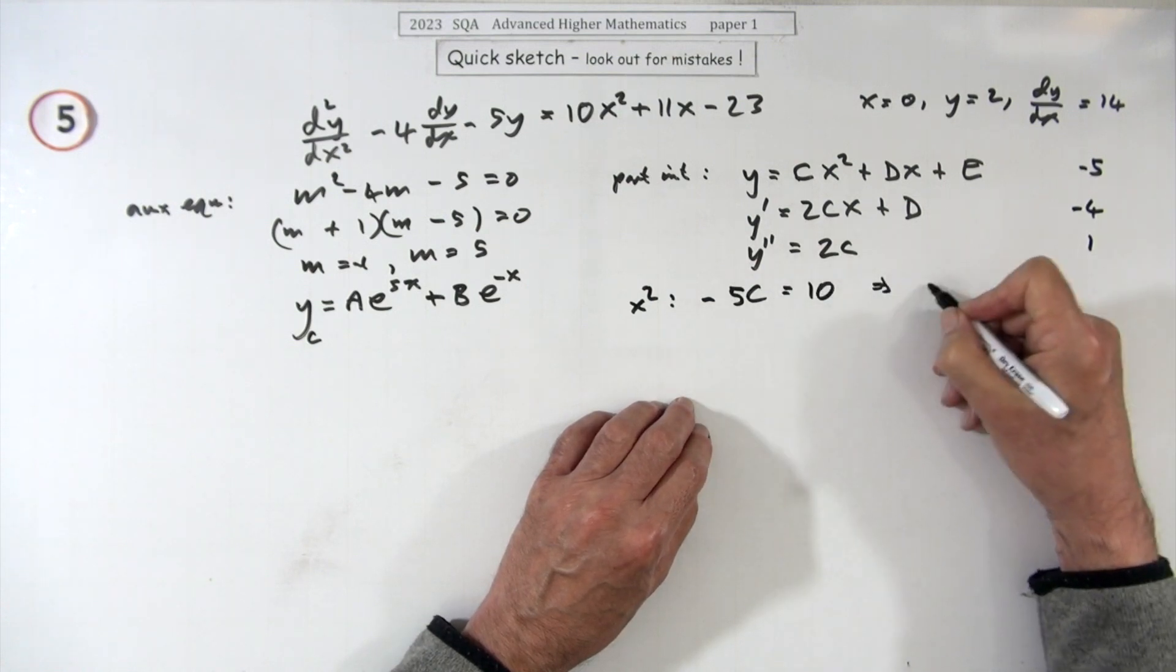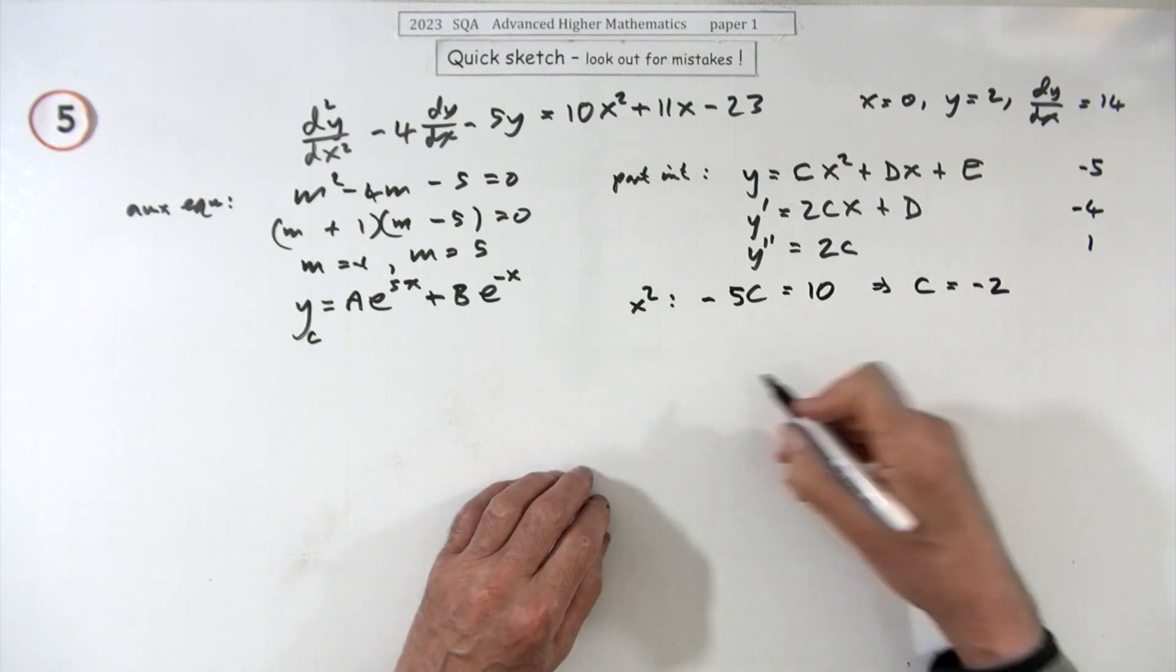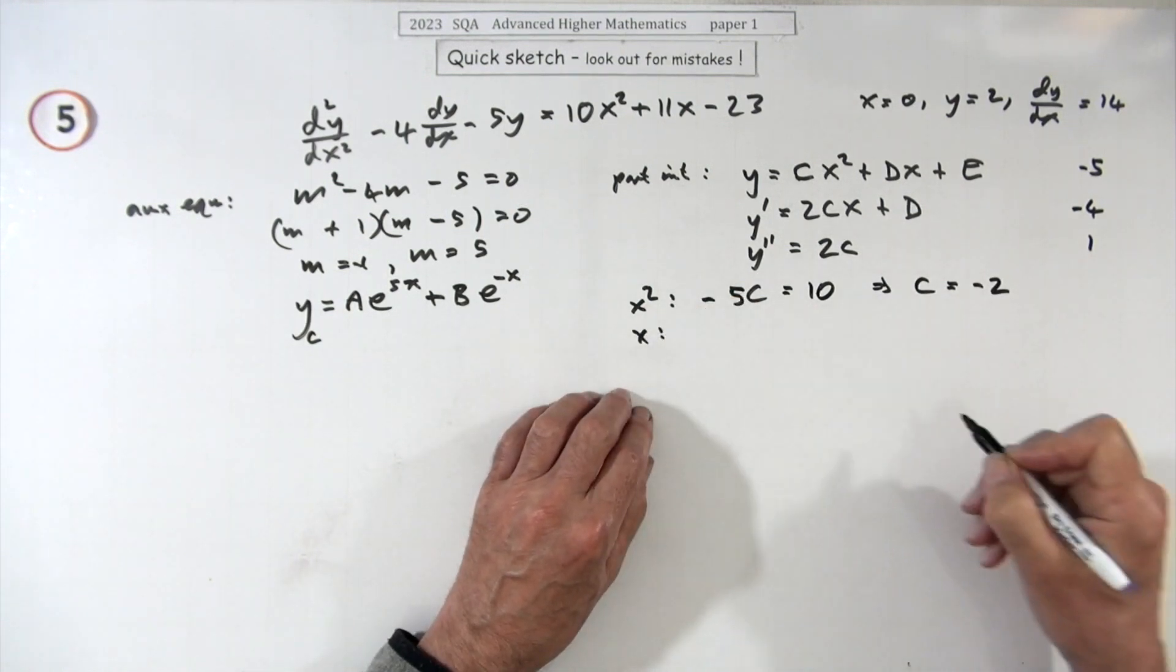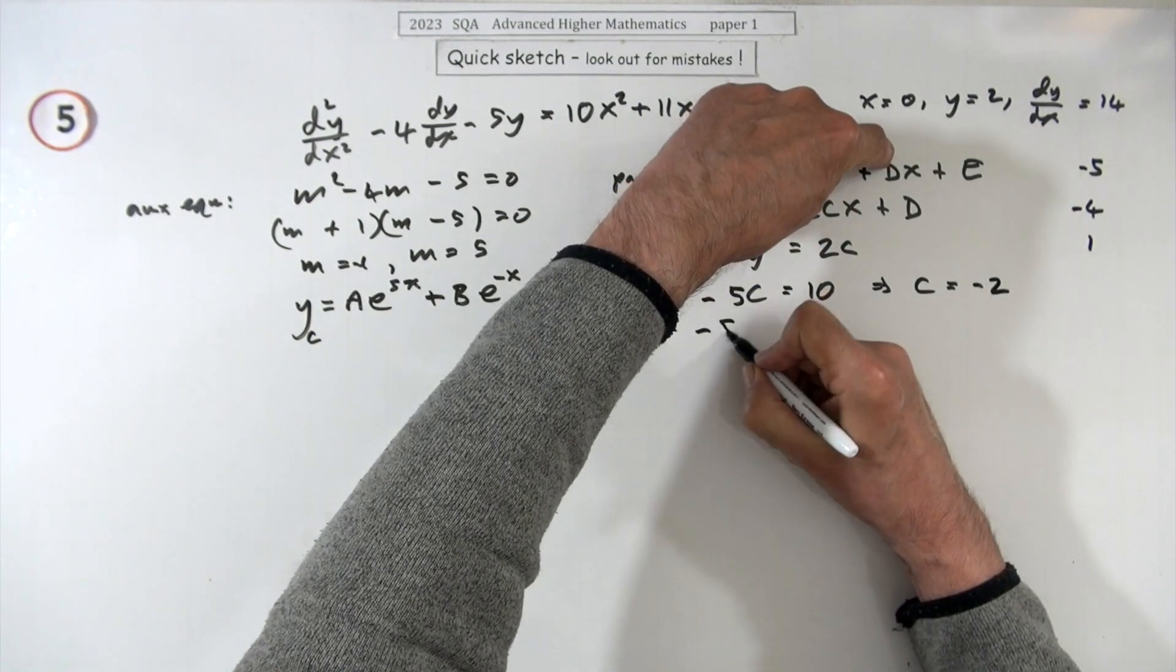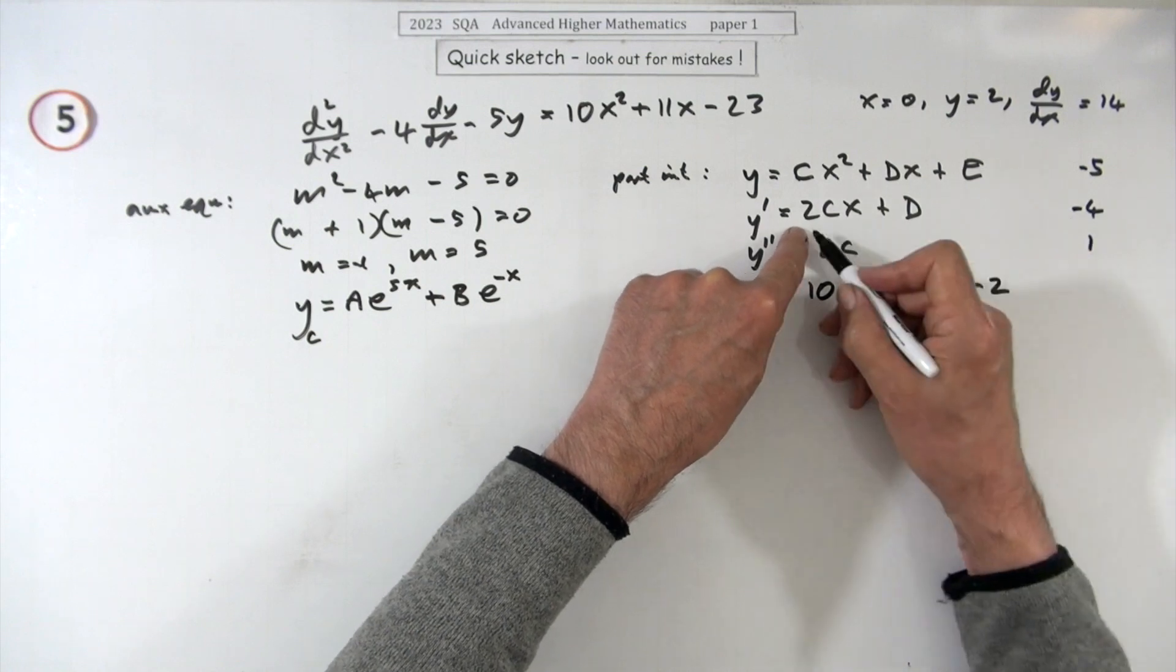Right, now the x term. What makes up x? Well I've got minus five of d here, and then this one here is minus 8c here, and that's all we've got for them, and that should equal 11.